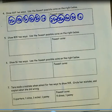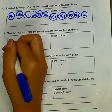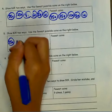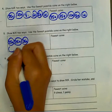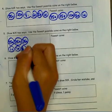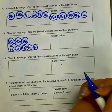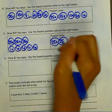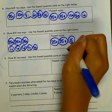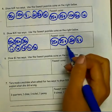Number 5: Show 80 cents two ways. Use the fewest possible coins on the right below. I could use 3 quarters, which gives me 75 cents, and 5 pennies, which gives me 80 cents. Now, when using the fewest amount of coins, I could use my 3 quarters, but instead of using 5 pennies, I can use 1 nickel. So here I have 8 coins, but here I'm only using 4 coins.